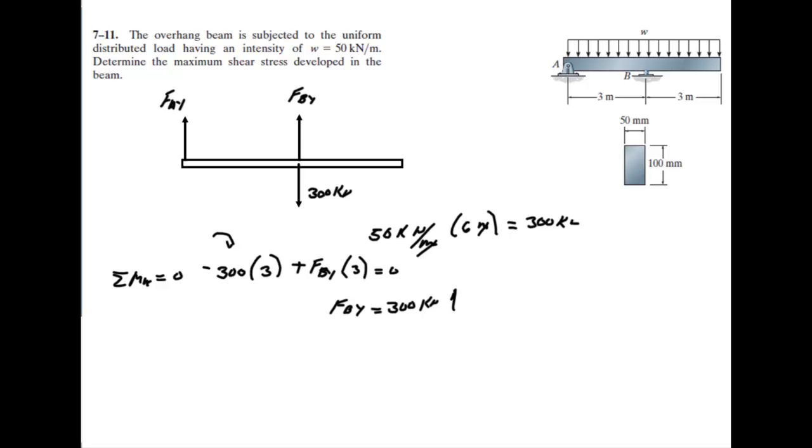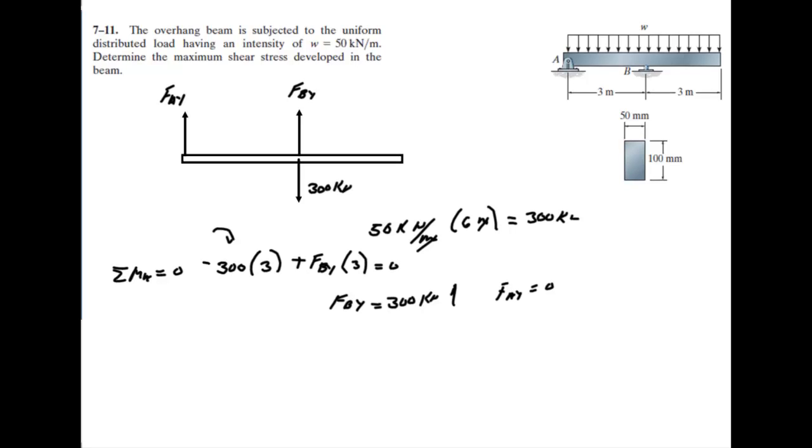You'll get FBy equals 300 kilonewtons going up. Sum of the forces in the y direction, you can find that FAy is zero. Now you're ready to draw your shear diagram.